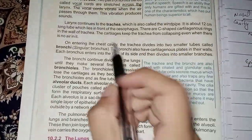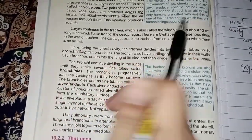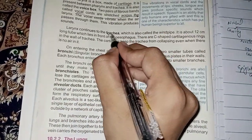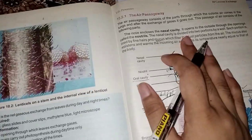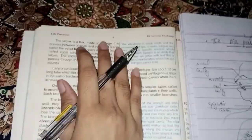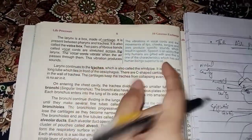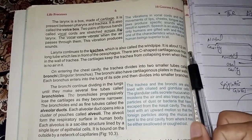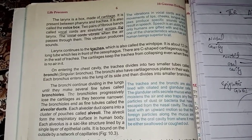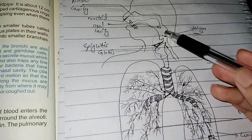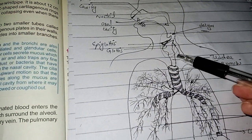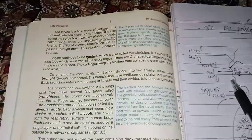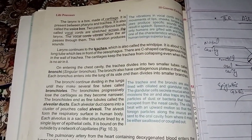Moving on, the next part is the trachea. The first paragraph covers nasal cavity, the second pharynx, and the third is trachea. The larynx continues into the trachea, which is also called the wind pipe. This part is commonly referred to as the wind pipe.